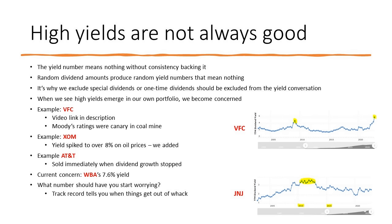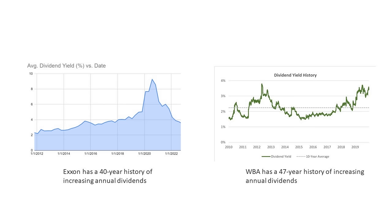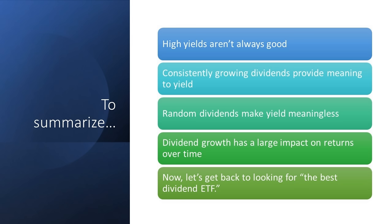What numbers should you start worrying at? Track records tell you when things get out of whack. I've put the J&J yield chart here showing the ceiling — if you see their yield break that ceiling, you might want to investigate why. Here I've put up a couple of charts: one shows Exxon's spike above 8%. Walgreens has a 47-year history of increasing annual dividends, but looking at their nine-year yield history plotted to 2019, the yield stayed under 4% — that spike to 7% is extremely concerning. To summarize: high yields aren't always good; consistently growing dividends give meaning to a yield number, and dividend growth has a large impact on returns over time.